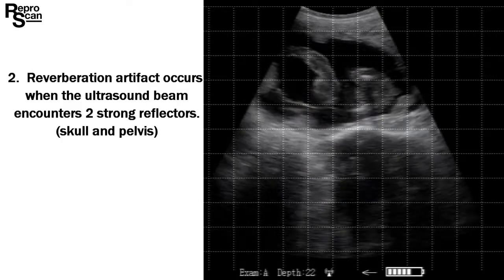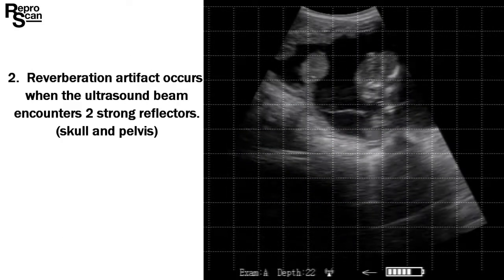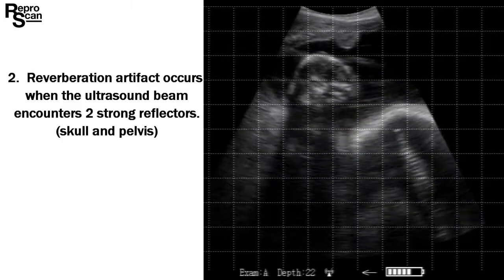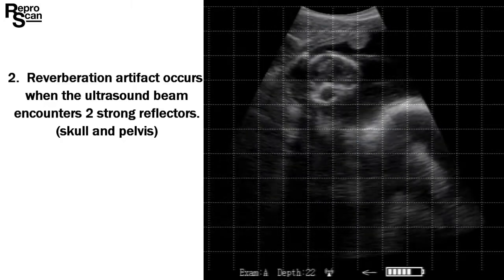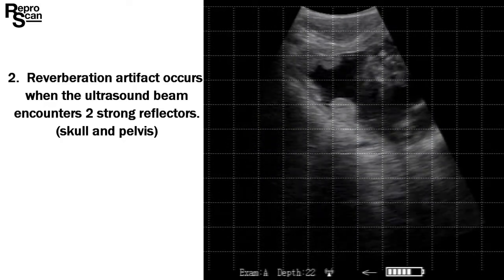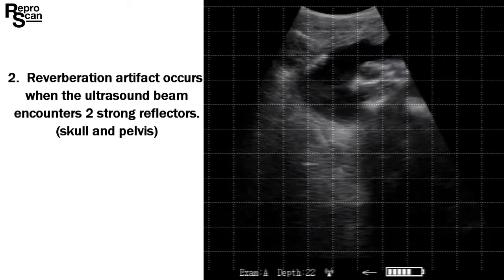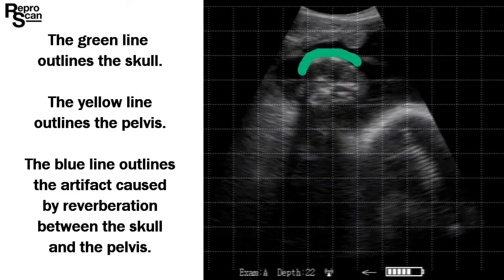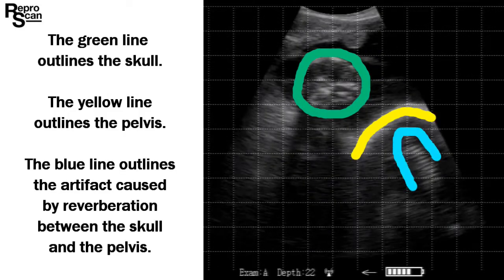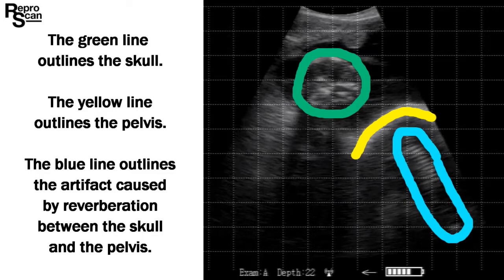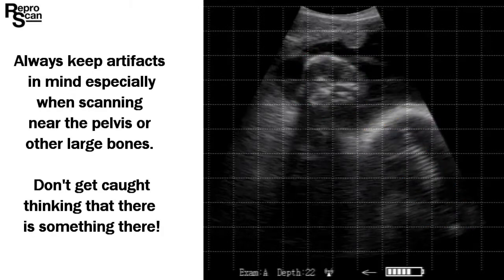A second reverberation artifact occurs when the ultrasound beam encounters two strong reflectors — in this case the skull and the pelvis. The green line outlines the skull, the yellow line outlines the pelvis, and the blue line outlines the artifact caused by the reverberation between the skull and the pelvis.